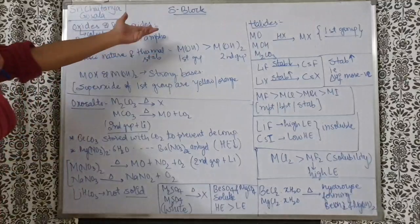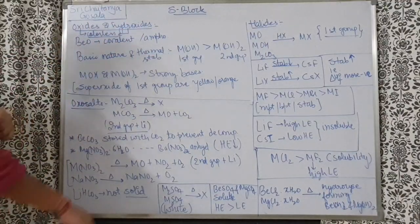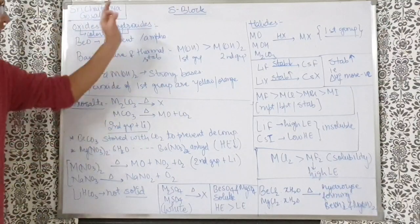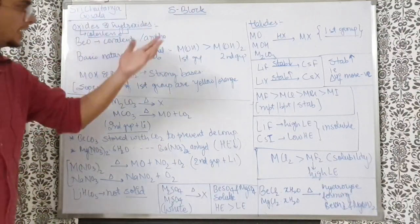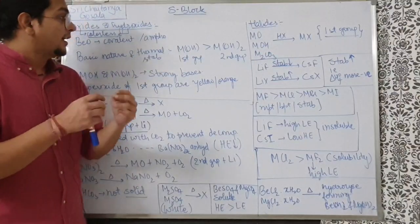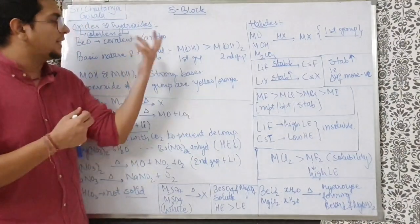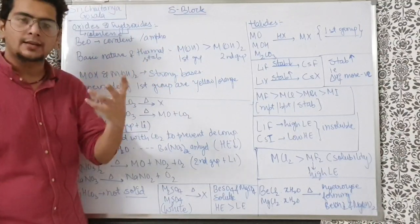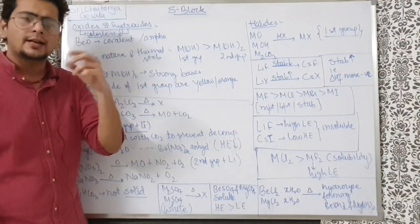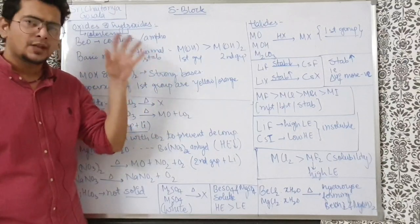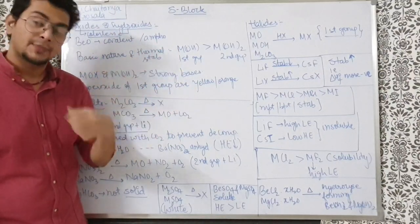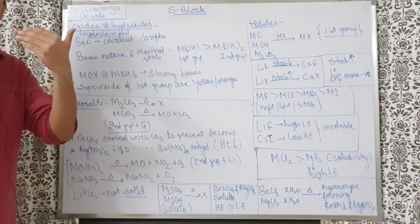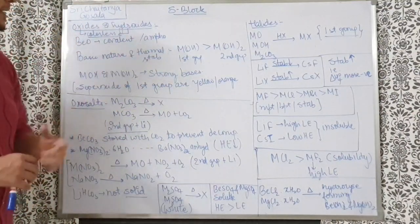Beryllium oxide is covalent and amphoteric. Both basic nature and thermal stability are higher for Group 1 than Group 2. For example, if you heat NaOH versus Mg(OH)2, Mg(OH)2 will break and release water at a lower temperature than NaOH — so thermally NaOH is more stable. NaOH is also a stronger base, furnishing OH⁻ more easily in aqueous medium.